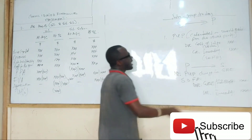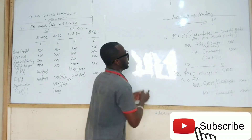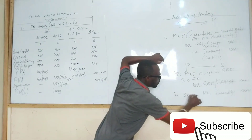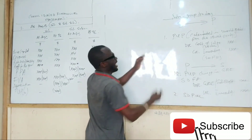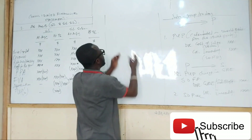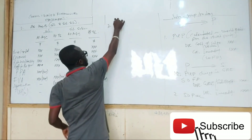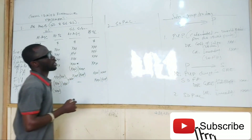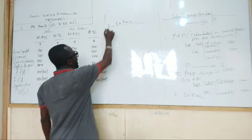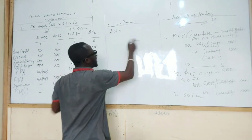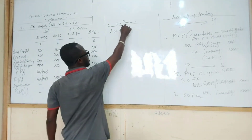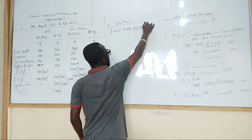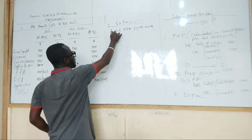The standard says that if you are preparing the statement of profit or loss, there is a way you must treat the actual sales. In the group statement of profit or loss, the actual sales figure must be cancelled out.